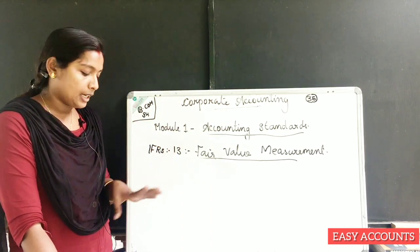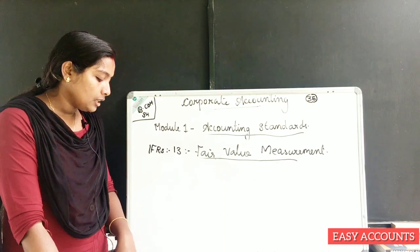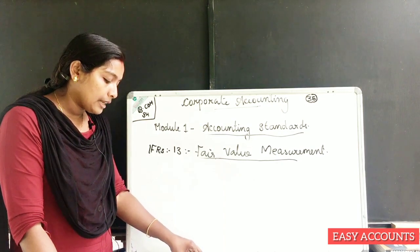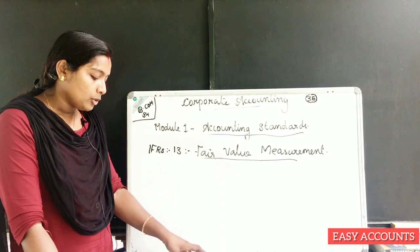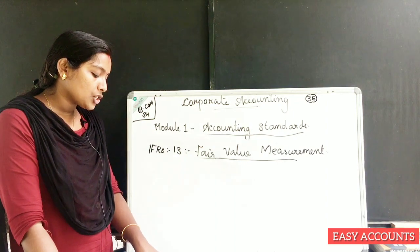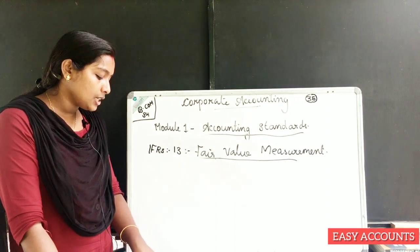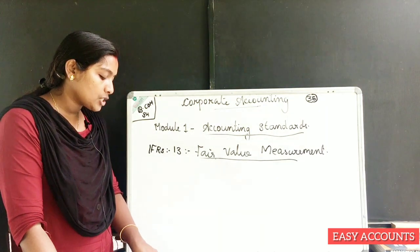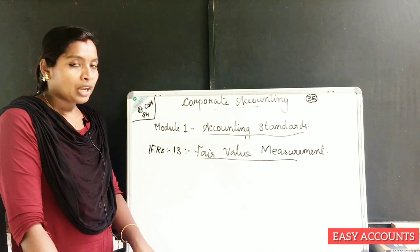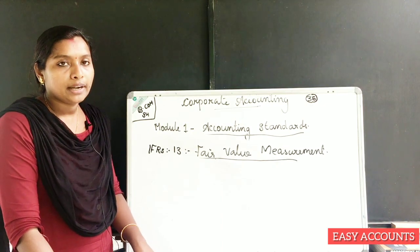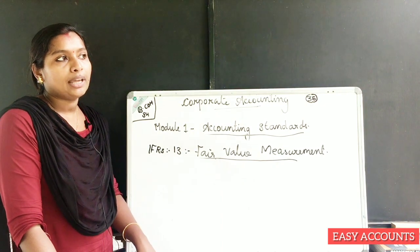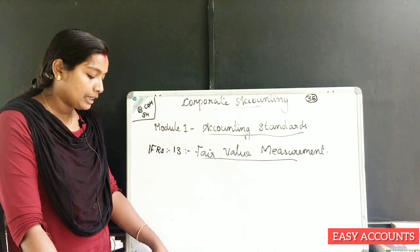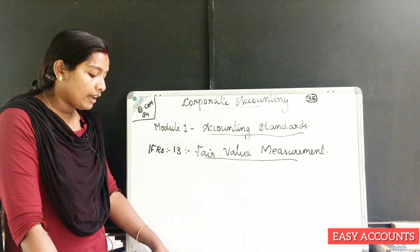We have a fair value measurement. If an entity is intending to hold an asset or to settle or otherwise fulfill a liability, that intention is not relevant when measuring fair value. If an asset is being held or discharged, we don't need to measure that intention — only the fair value.